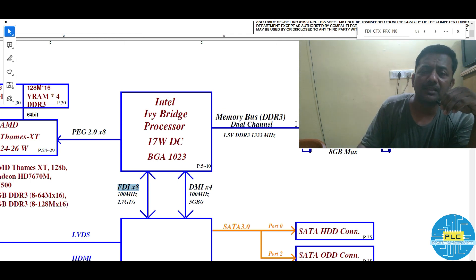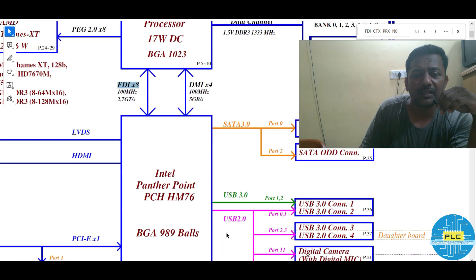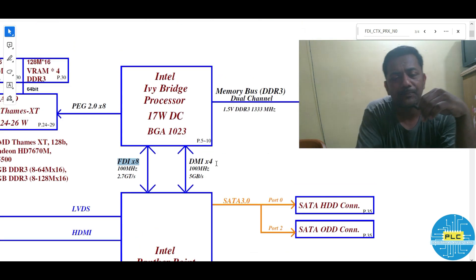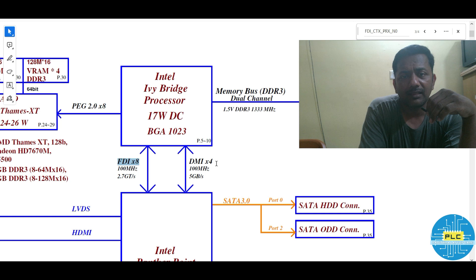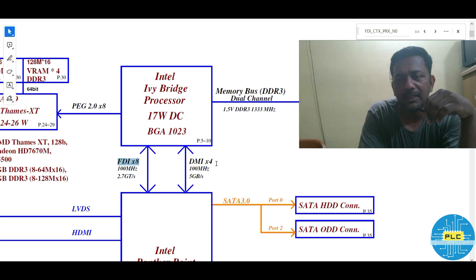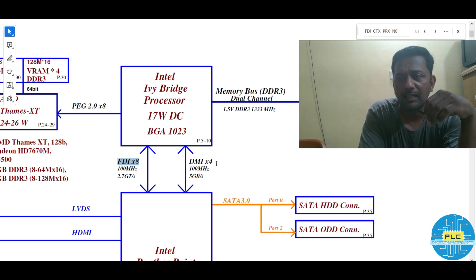See, these are all our buses — this is memory bus, this is FDI, this is DMI, and these are SATA, LVDS, HDMI — many are there, all we call our buses. The processor does the processing work, the processing job which is assigned from the PCH. How PCH will assign to the processor — that in depth we can learn in next stages.